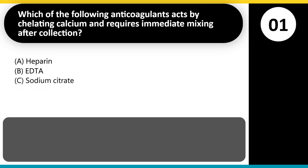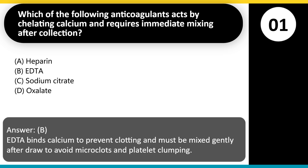Which of the following anticoagulants acts by chelating calcium and requires immediate mixing after collection? A. Heparin. B. EDTA. C. Sodium citrate. D. Oxalate. Answer: B. EDTA binds calcium to prevent clotting and must be mixed gently after collection to avoid microclots and platelet clumping.